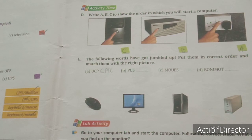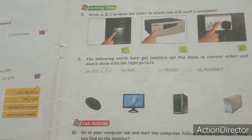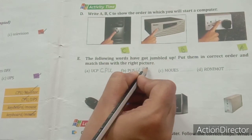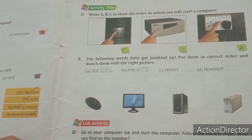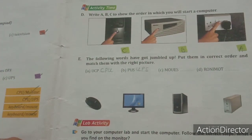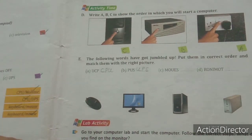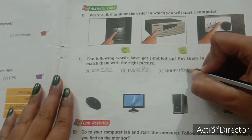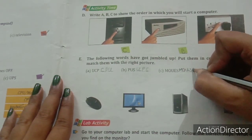The next jumbled word has the letters M, O, U, E, S. Is there such a word? Yes, but the spelling is wrong. What is the correct spelling? M-O-U-S-E — mouse.